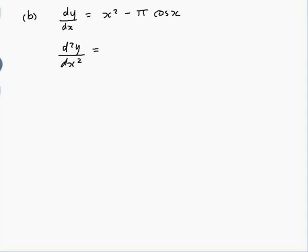So that would be the derivative of x squared. We put the current power at the front and reduce the power by one. So that would be 2x. The derivative—π is just a constant so we leave it there. The derivative of cos is minus sine. So that's actually equal to 2x plus π sine x. And then the third derivative, we differentiate again. So d³y/dx³.